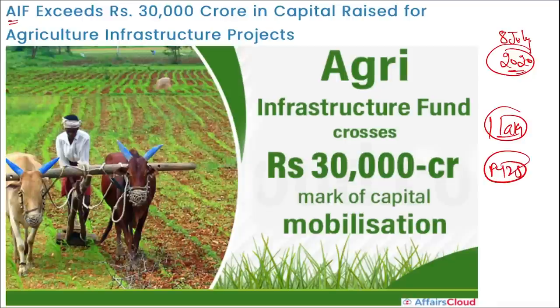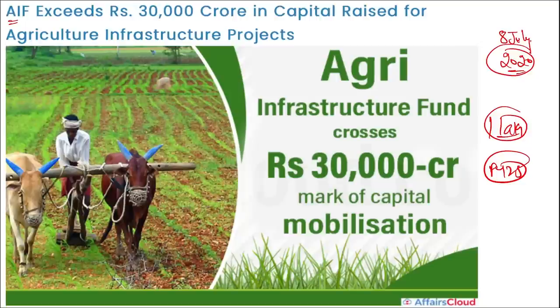Interest subvention and credit guarantee support will be provided until fiscal year 2032. Under the Credit Guarantee Fund Trust for Micro and Small Enterprises scheme, eligible borrowers will have credit guarantee coverage of up to 2 crore rupees. There is a 3% annual interest subsidy on all loans made through this facility, up to a maximum of 2 crore rupees, available for a maximum period of seven years.